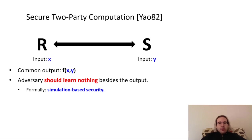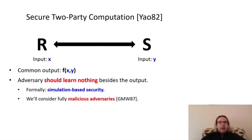This intuition has been formalized as simulation-based security, which requires that a computationally bounded adversary should be unable to distinguish between the real execution of the protocol and an idealized execution with a trusted third-party and simulated messages. Additionally, while two-party computation was originally studied in the semi-honest setting, where adversaries could attempt to learn private information but otherwise were required to adhere to the protocol, we'll consider simulation-based security with fully malicious adversaries who are able to deviate from the protocol arbitrarily.